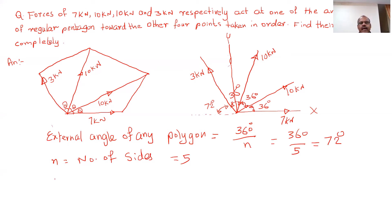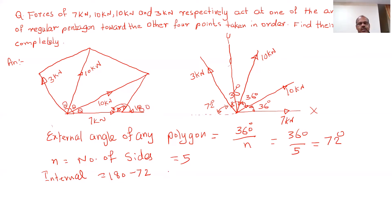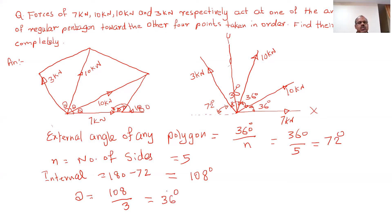We need to find the internal angle of the pentagon. The internal angle equals 180° minus the external angle, which is 180° − 72° = 108°. Now, the internal angle is divided equally into three parts by the three intermediate force directions, so theta = 108° ÷ 3 = 36°.